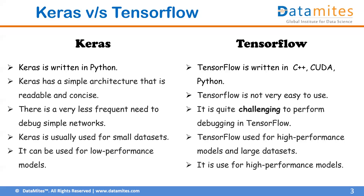Keras can be used for low-performance models — meaning models that use less memory and fewer resources — because Keras is typically used for smaller datasets and smaller networks, so memory consumption is also very small. TensorFlow, on the other hand, typically uses large datasets for research and high-performing tasks, which require a lot of computation and produce high-performance results. That's it for today, thank you.